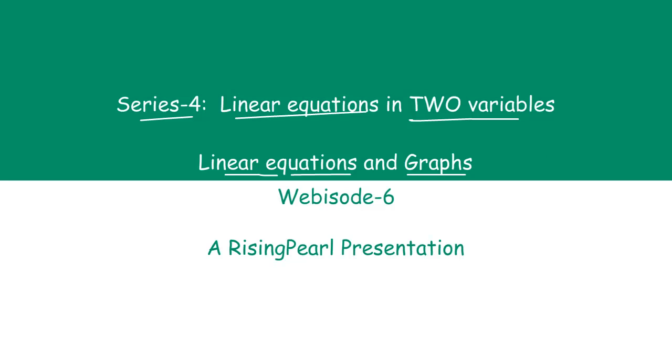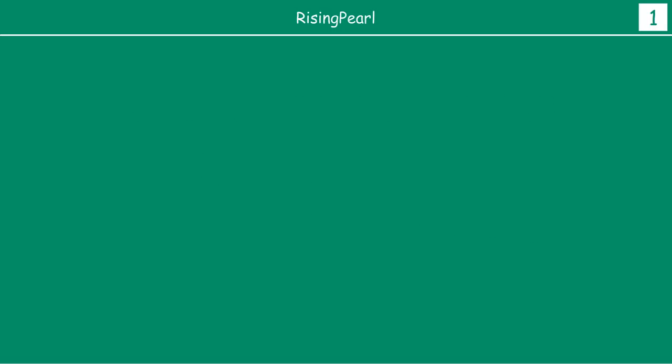So what do we mean by some general discussion? Now you have seen that if you have any linear equation in two variables, let us write a linear equation in two variables. This is an example of a linear equation in two variables. Now you have seen in our last webisode 5, if we have these solutions, there are infinite solutions. And if we graphically represent those solutions, we will probably get a straight line.